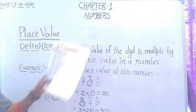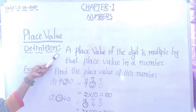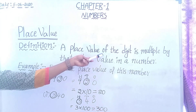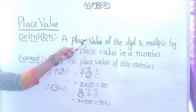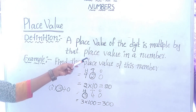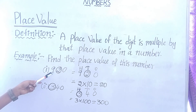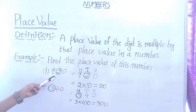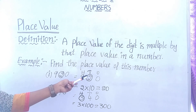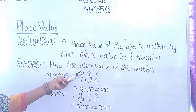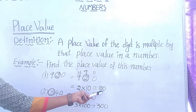Now we are discussing place values in Chapter 1: Numbers. Place value means: the place value of a digit is the digit multiplied by that place value in a number. Example — find the place value of the number 9, 2, 0. First find the places: 0 in 1's place, 2 in 10's place, 9 in 100's place. Find the place value of 2: it is in the 10's place, so 2 into 10 equals 20.